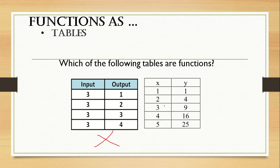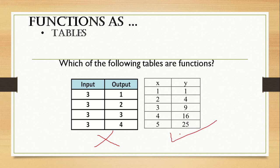How about the next table? Given our value of x which is 1, 2, 3, 4, and 5, and for our y we have 1, 4, 9, 16, 25. Looking at its relation, we have ordered pairs: (1,1), (2,4), (3,9), (4,16), (5,25). As you can see, the relation for each pair is 1-to-1 — we have exactly one output for each of our inputs. Therefore, we could say that this table is a function. And that's it for function as a table.